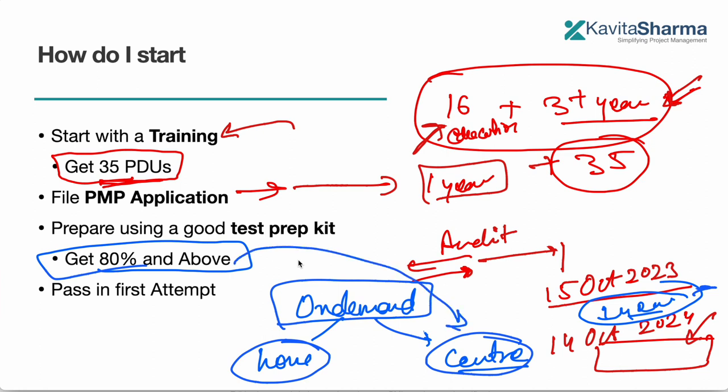Once you start getting more than 80 percent and above, then only schedule your exam. And I would suggest schedule it at center, because there are a lot of things which the center automatically takes care of for your exam, whereas at home you have to think about bandwidth, you have to think about a room where nobody comes in. It's a proctored exam, and people may cancel your exam in case somebody enters or there are noises or network goes down. So schedule an exam, you decide where do you want to put it. You have options to do it at home or do it at center.